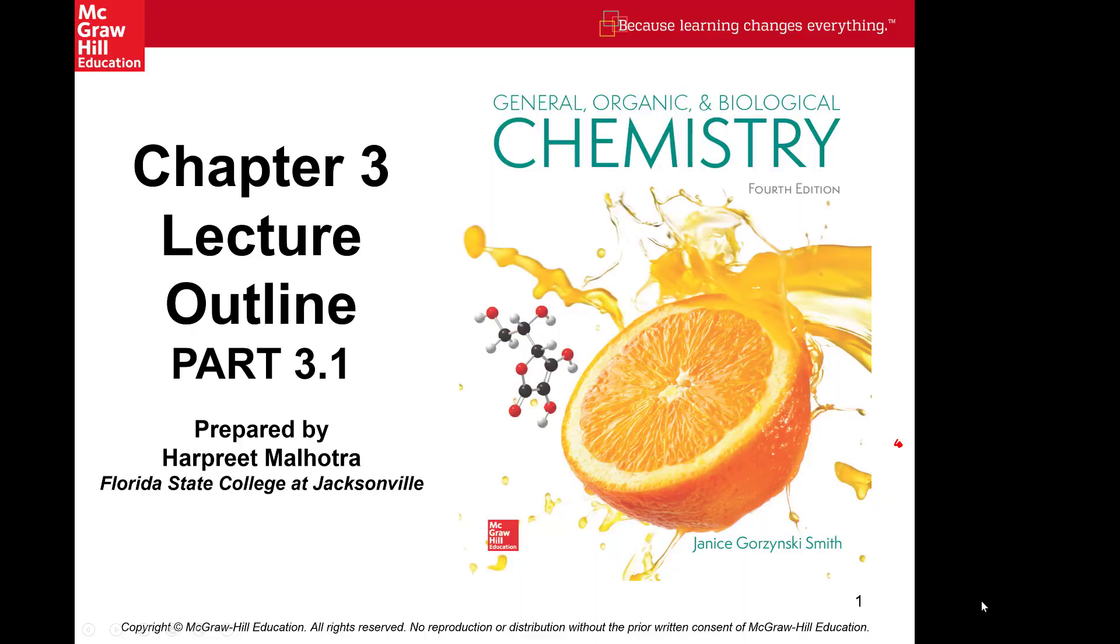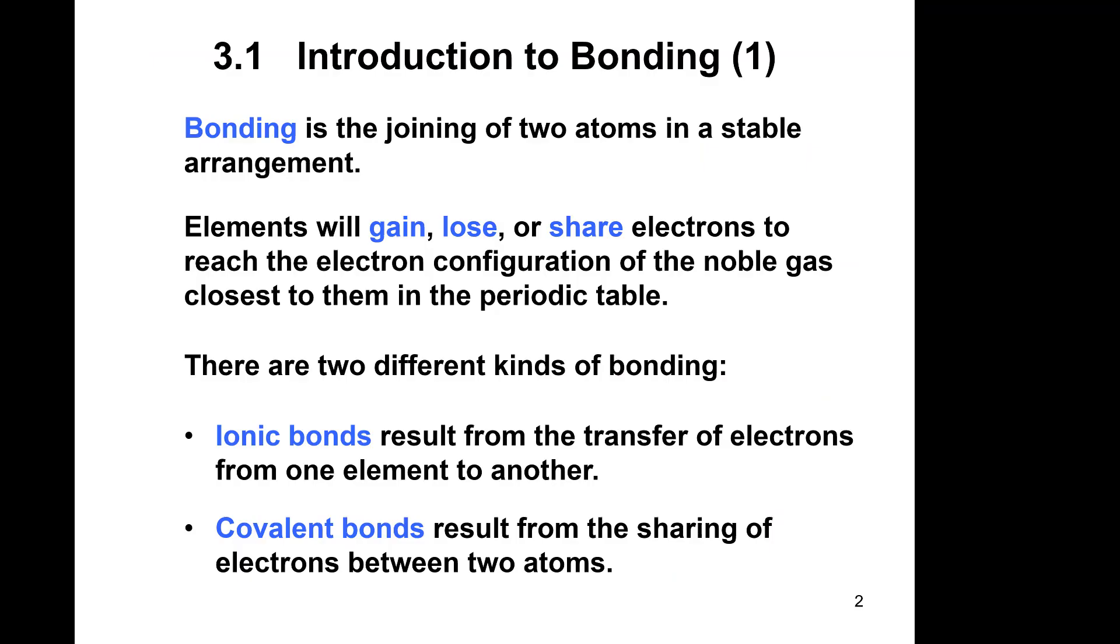In Chapter 3 we're going to talk about bonding, and specifically ionic bonding. But first, in part 3.1, I'm going to give you an introduction to what bonding is all about. Bonding is basically where we take two atoms and combine them together to form a stable compound. When we put them together, they're going to stay together.